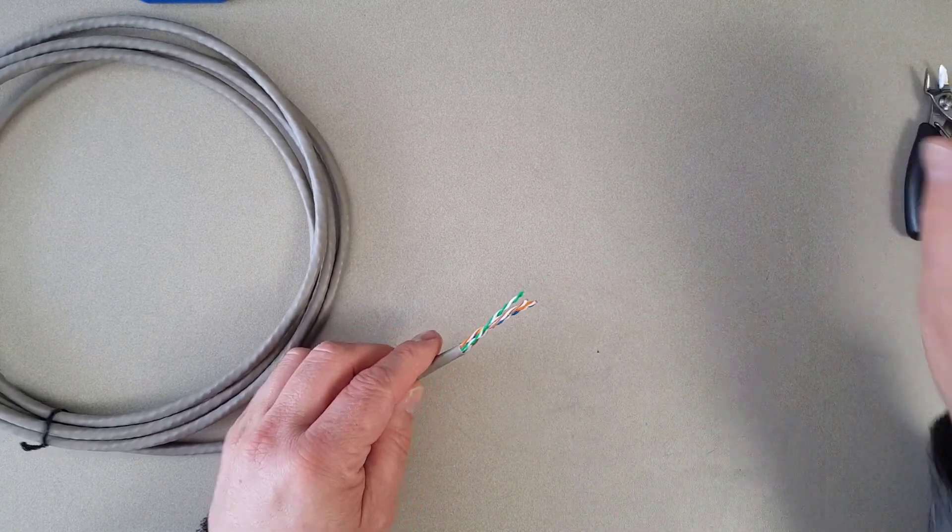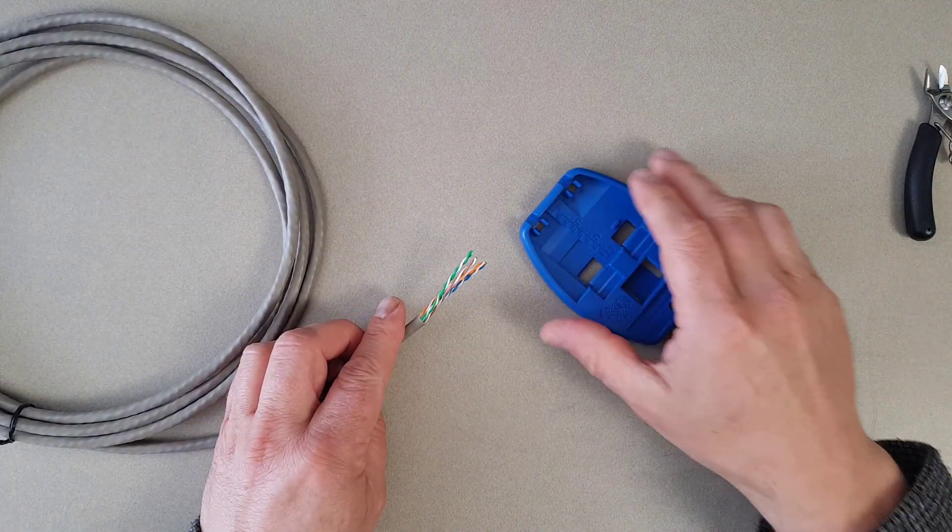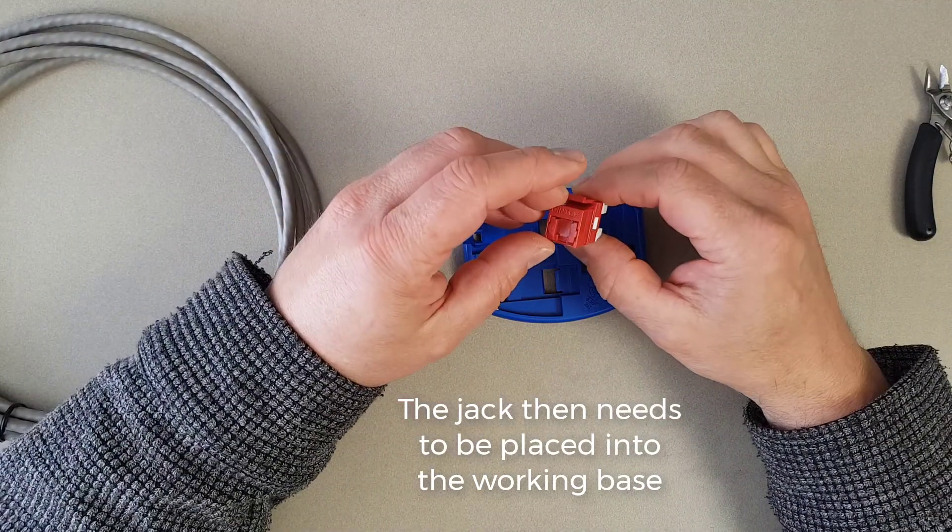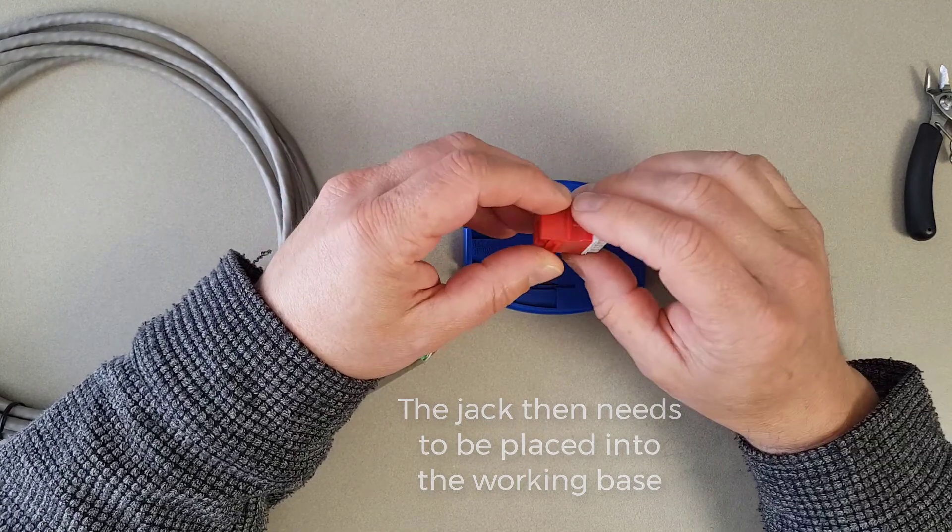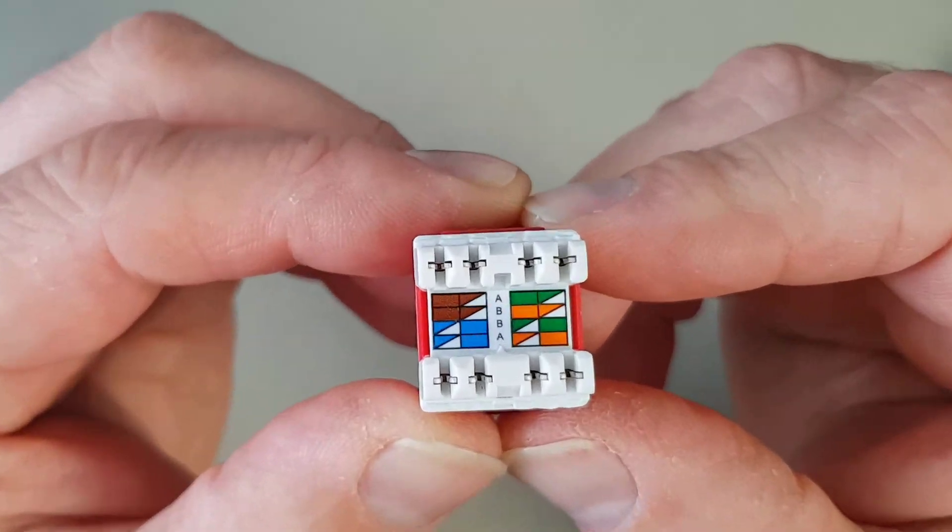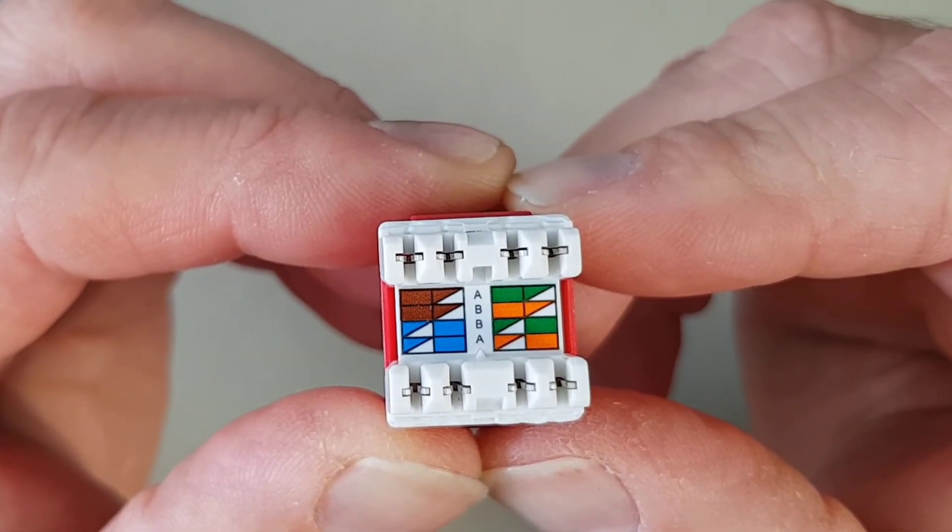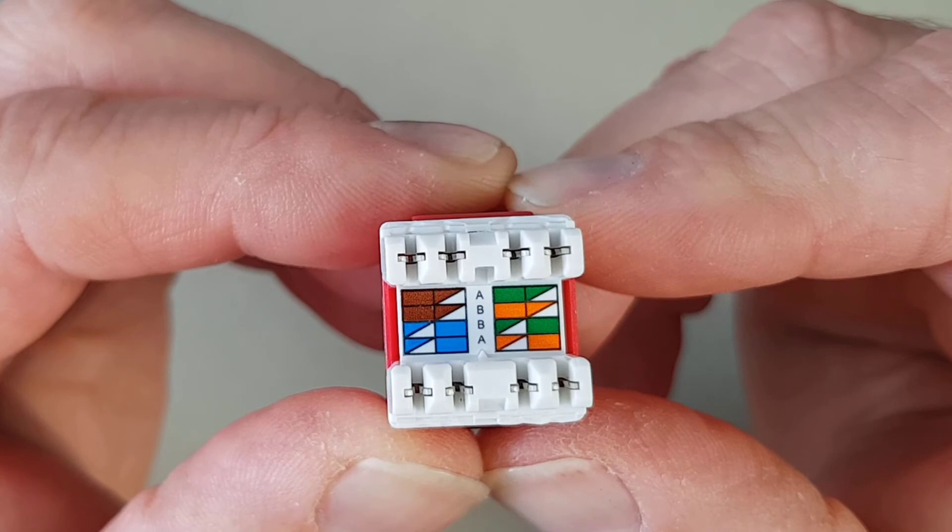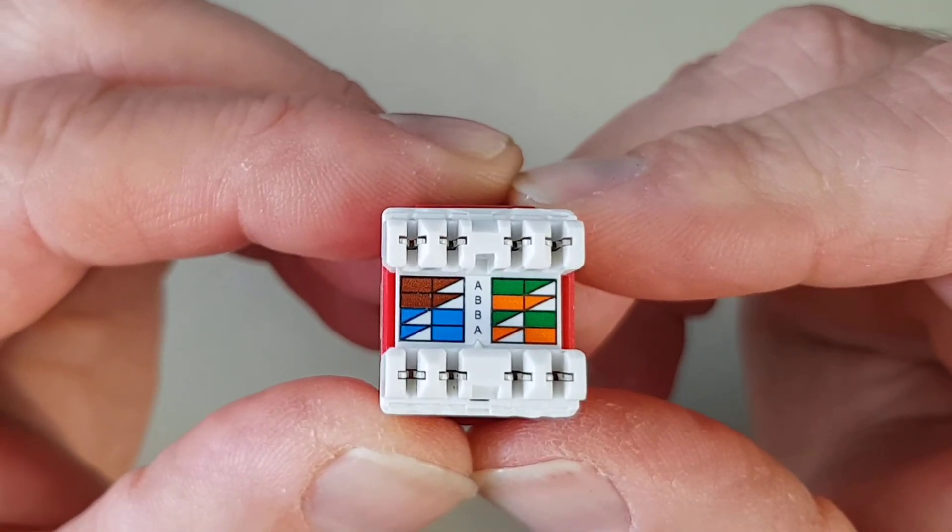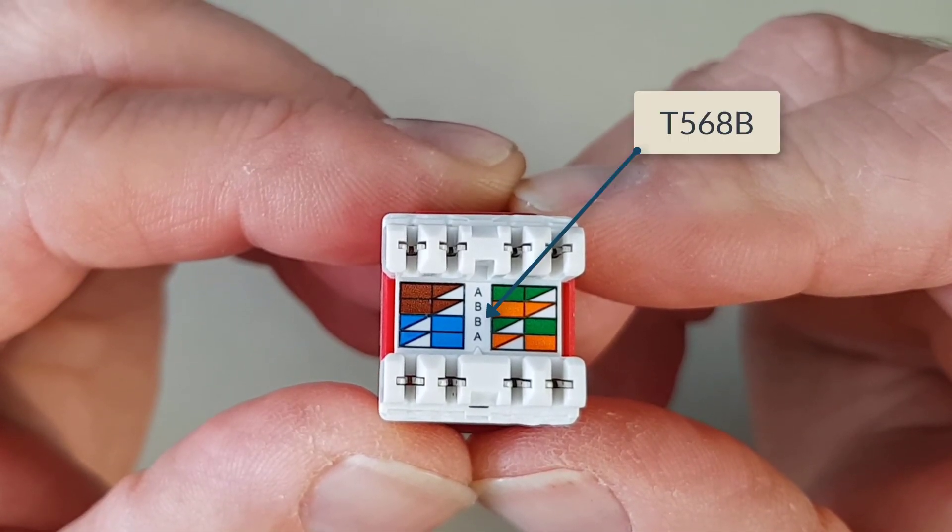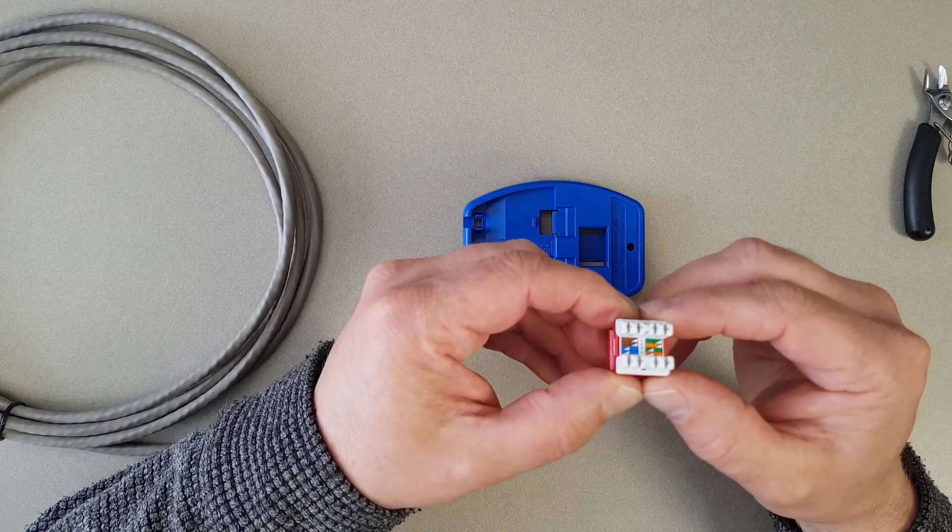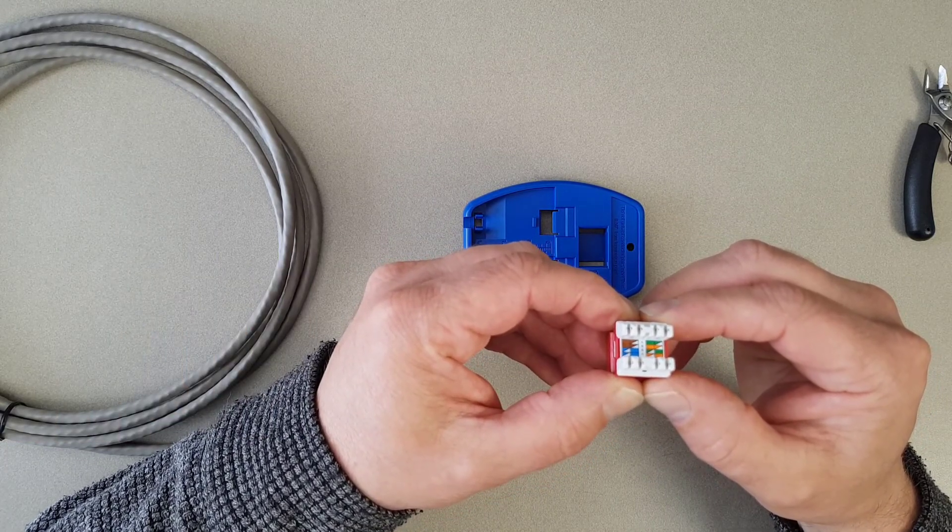Next we're going to take the working base and place the shuttered F jack inside. You can see inside the back of the jack it's got a series of colors, and these colors will tell you whether you're going to be terminating using the T568A or 568B termination specifications. Today I'm going to do a T568B termination.